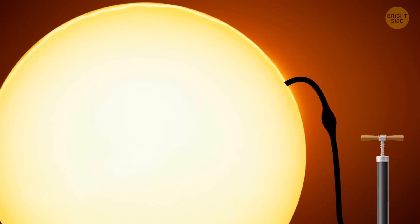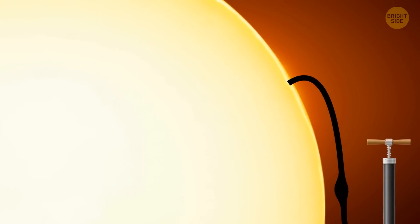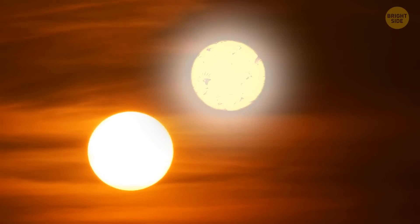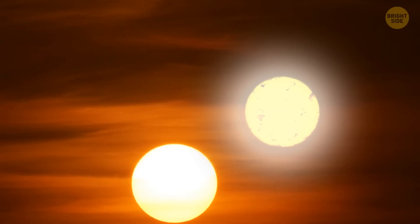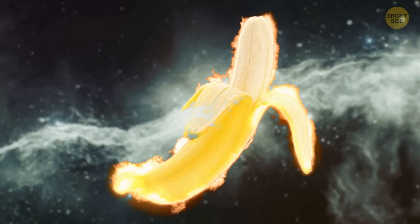Imagine having a billion tons of bananas hanging in space instead of hydrogen, the element our sun is mostly made of. There would be just as much pressure, which means the temperature would be just as high.